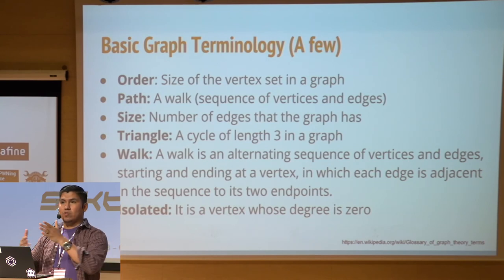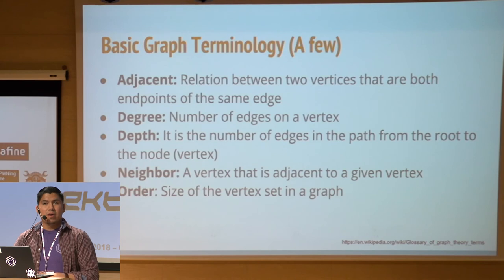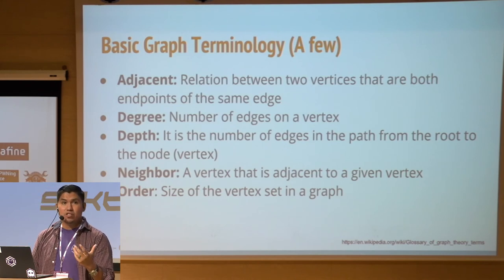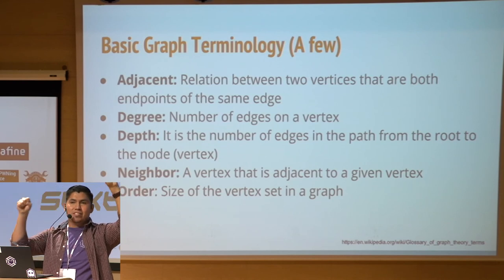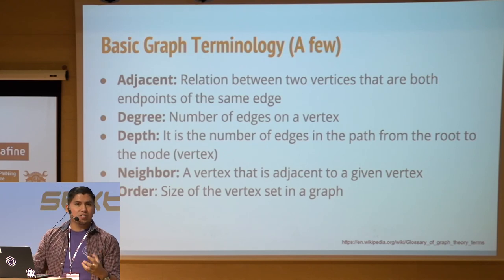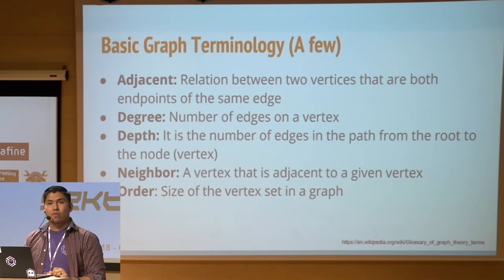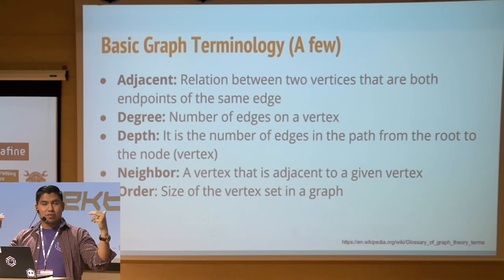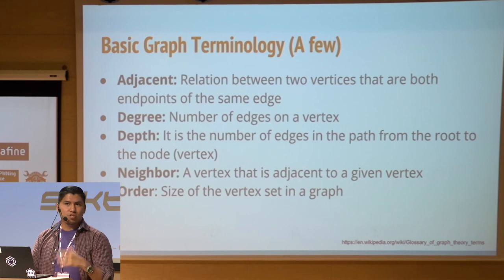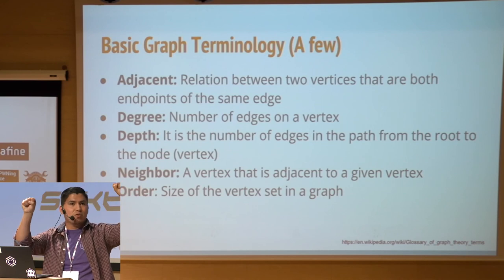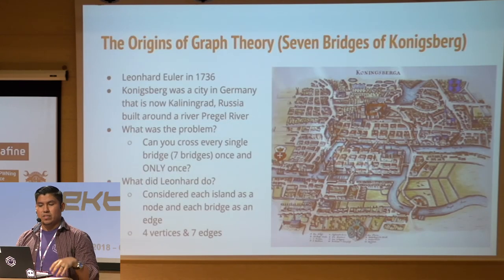More key terms: an adjacent vertex means that if you have node A connected by an edge to node B, then node A is adjacent to node B. Degree is the number of edges on a specific vertex. You have an in-degree — edges coming in — and an out-degree — edges leaving. Neighbors are vertices related to each other. These are basic concepts that will be applied throughout. Now let's talk about a bit of the history of graph theory.